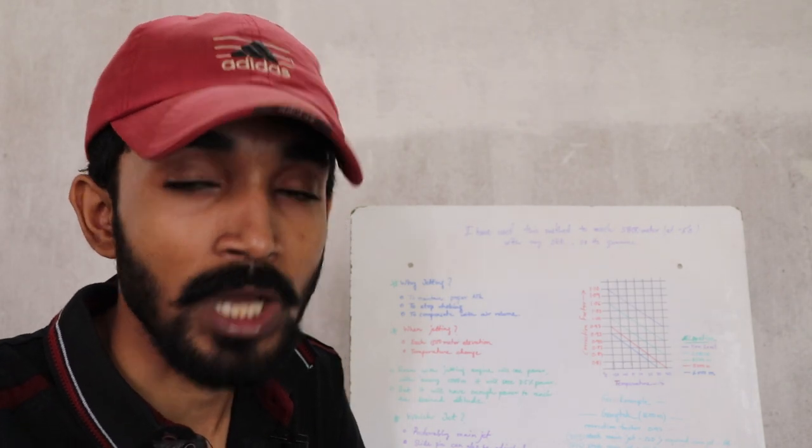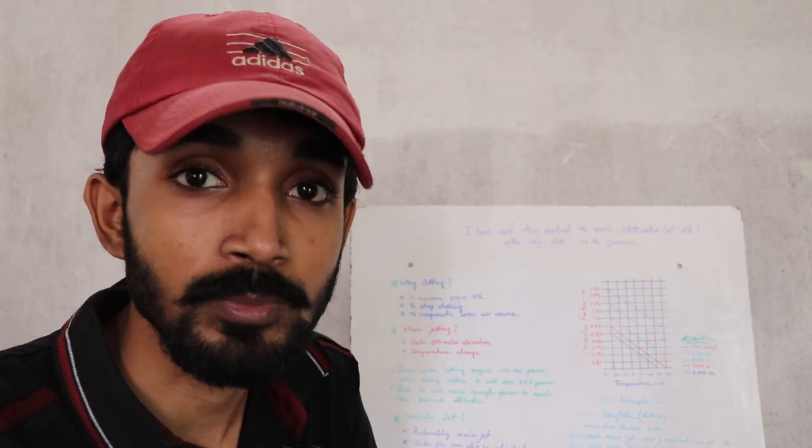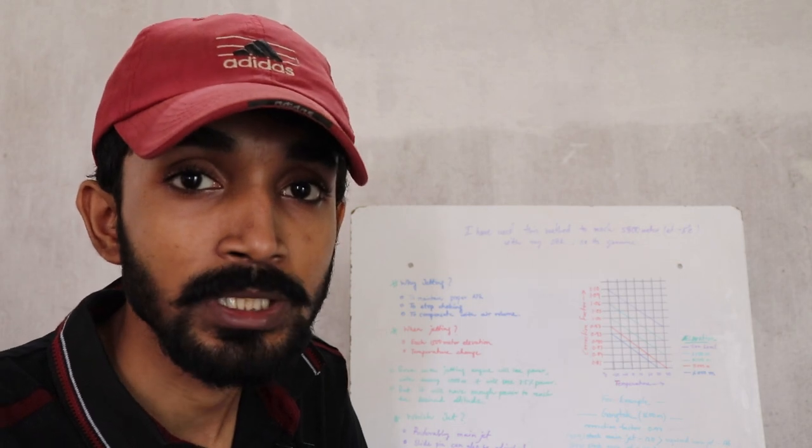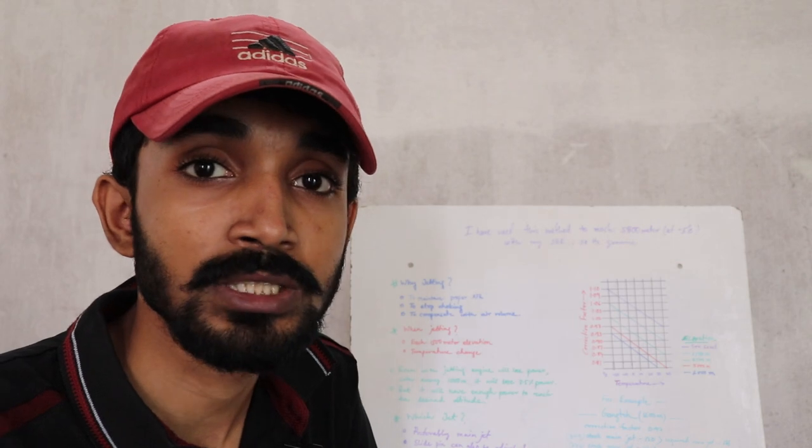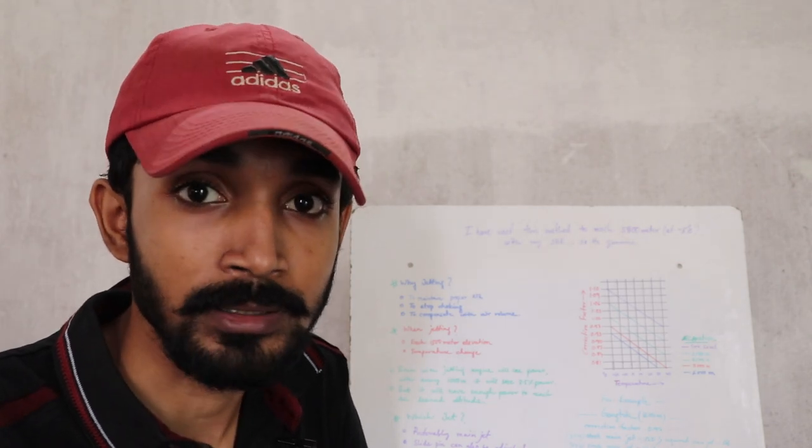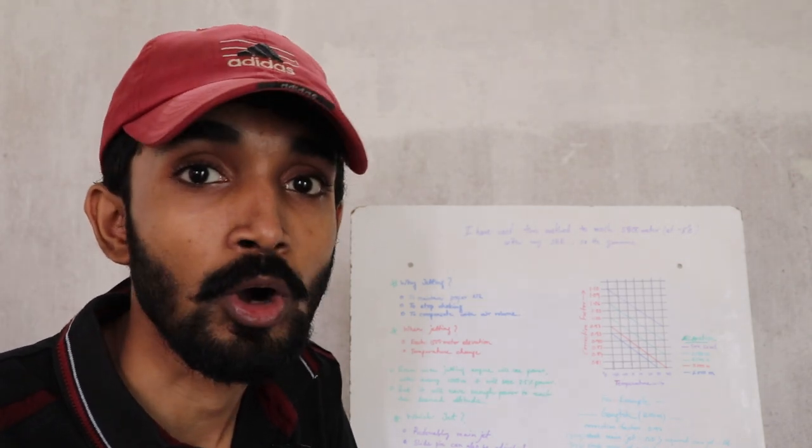But I managed to reach Thangu with a pillion and with the loaded bike with all the luggage and stuff. After Thangu it was really a problem with the bike. The bike was losing so much power.